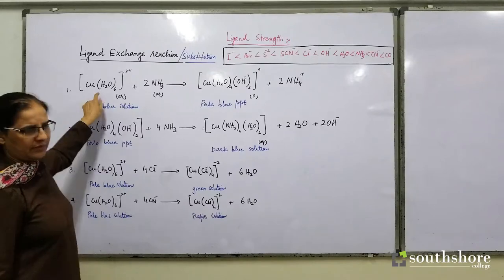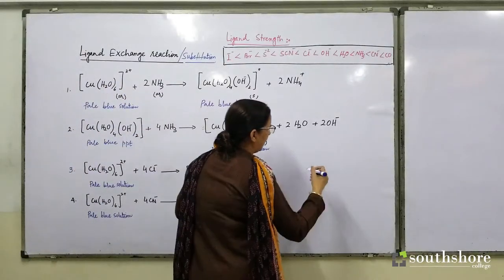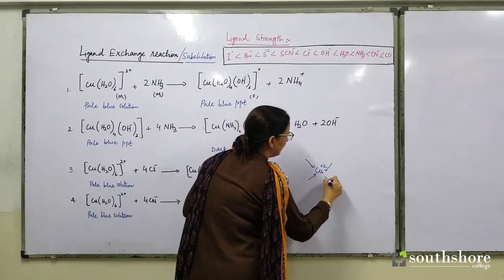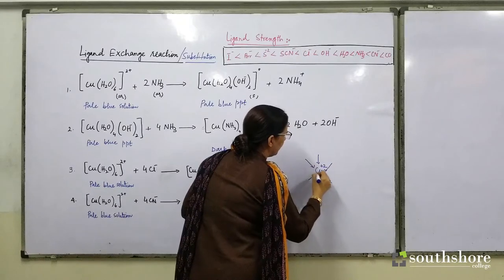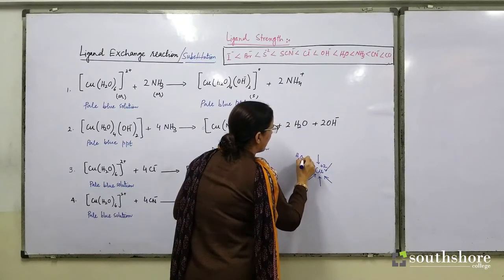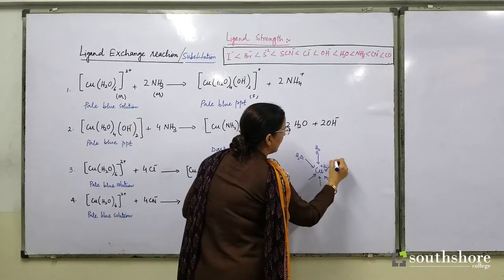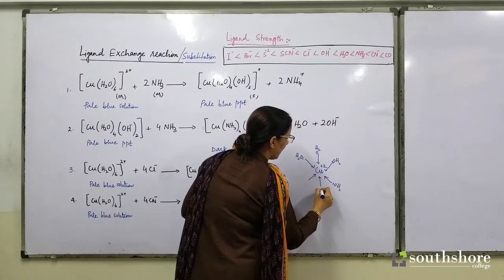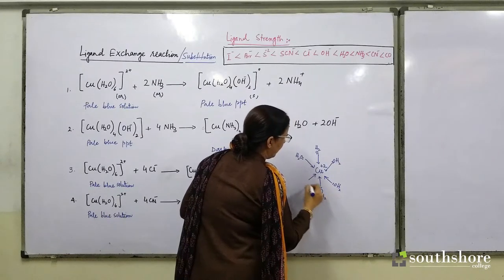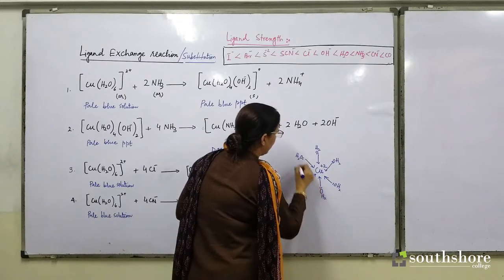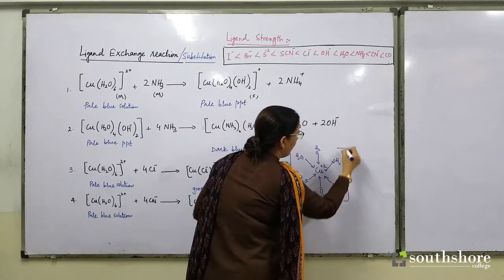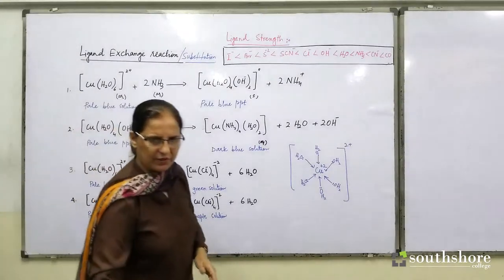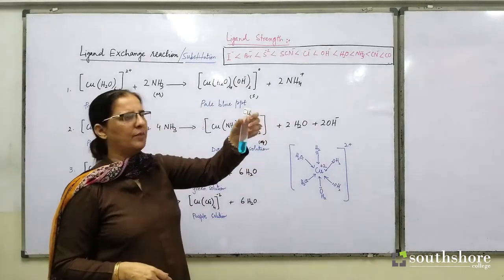When we talk about this hexa-aqua copper(II) complex, you are all familiar with the structure from the previous class. This is your octahedral complex. It has formed six dative bonds with water. Water is your monodentate ligand. So this is your hexa-aqua copper(II) complex. What is the color of this solution? This solution is your pale blue solution.